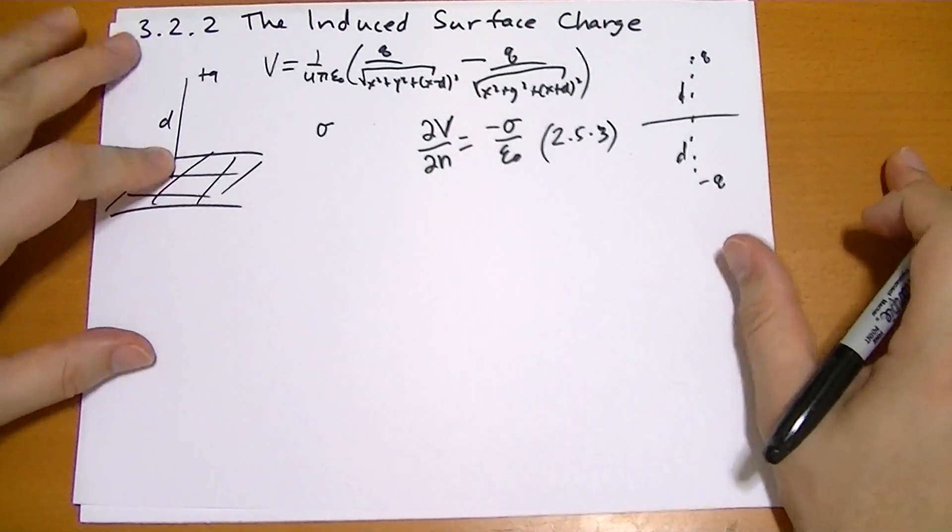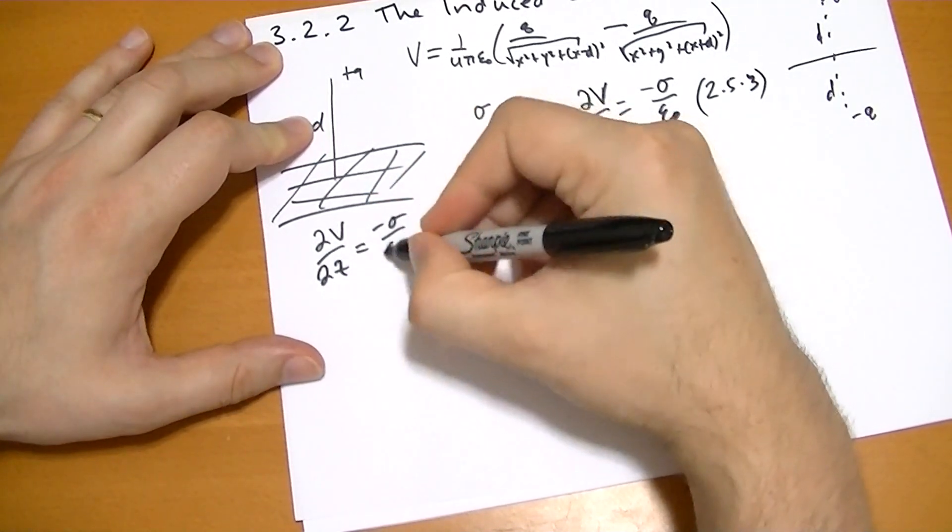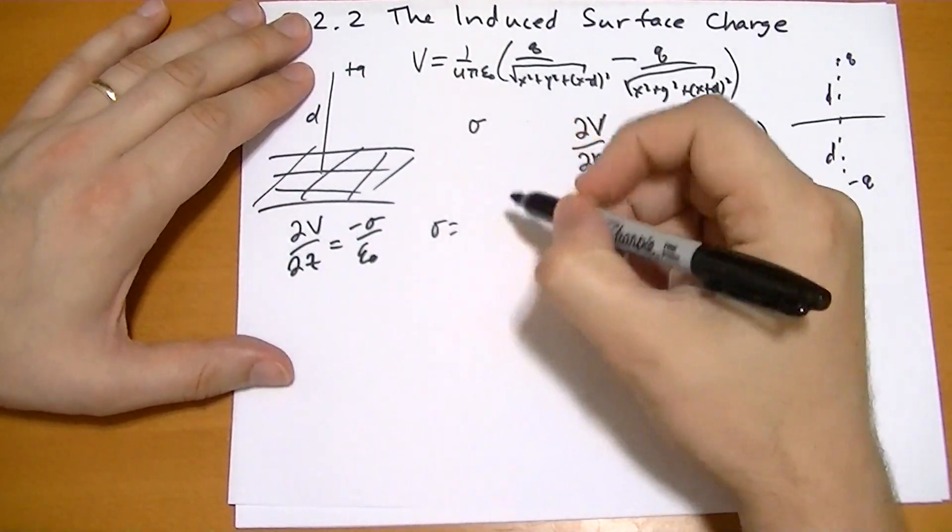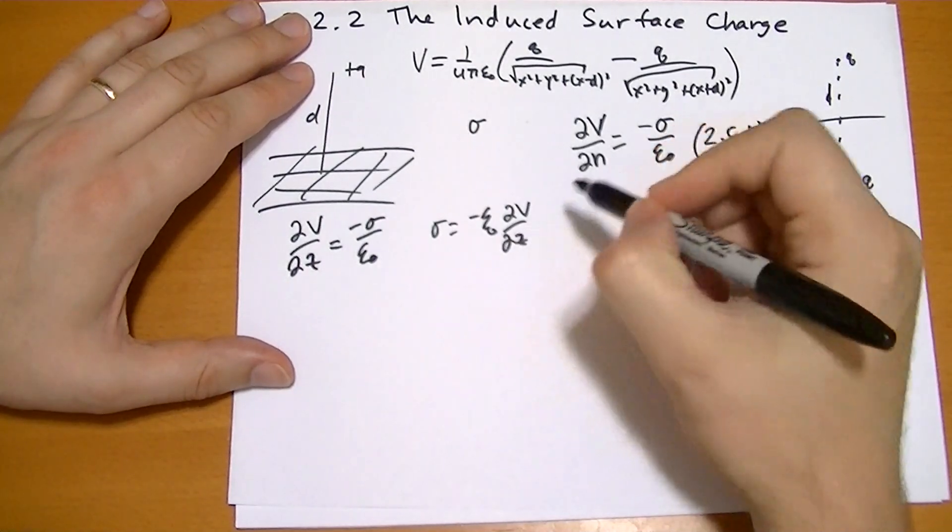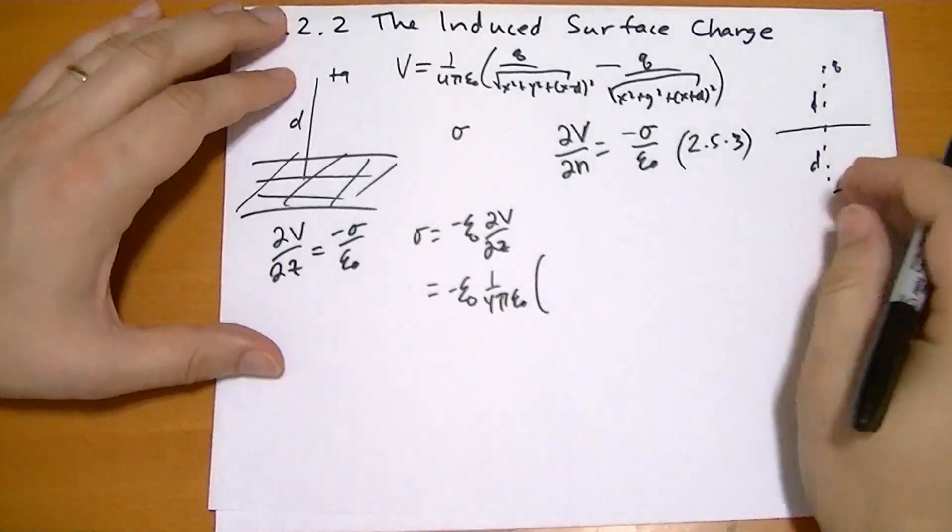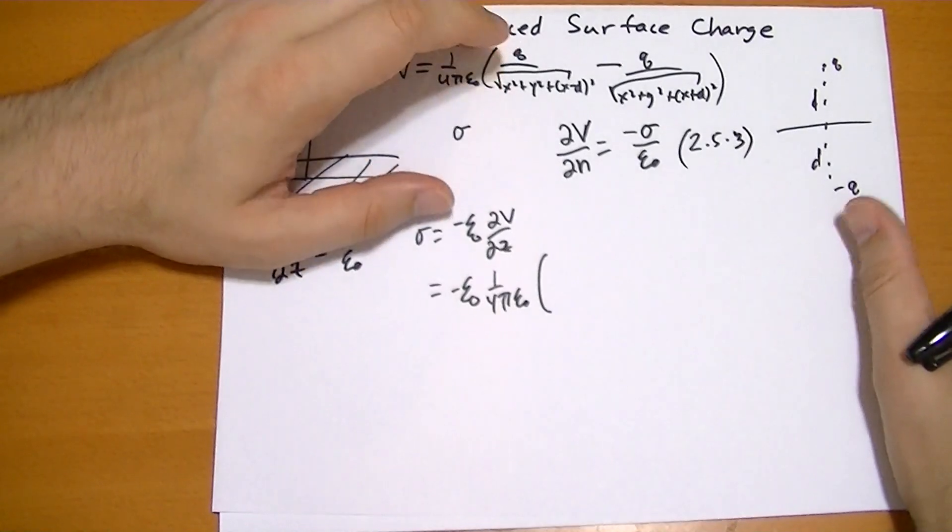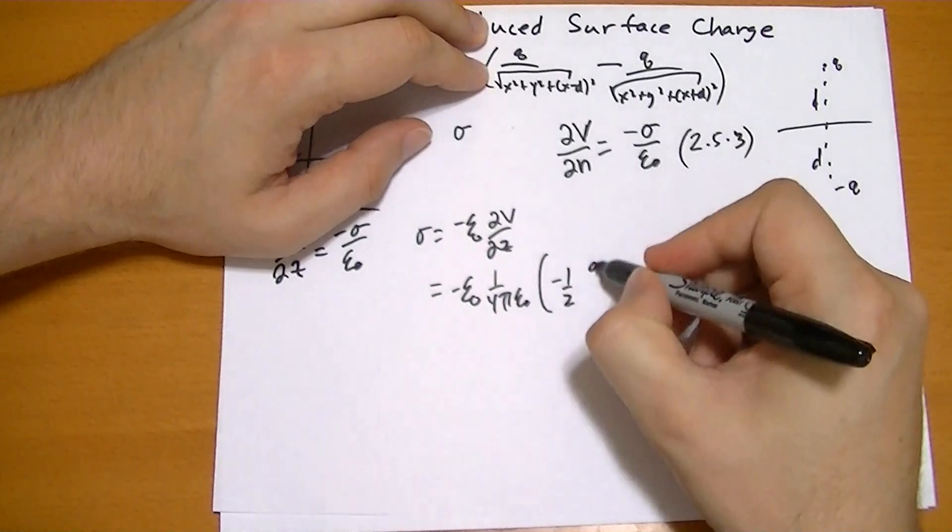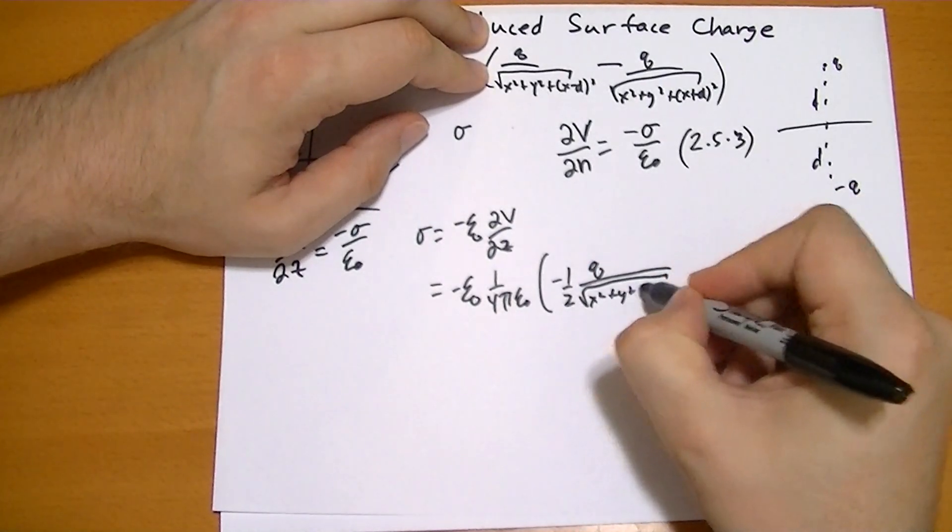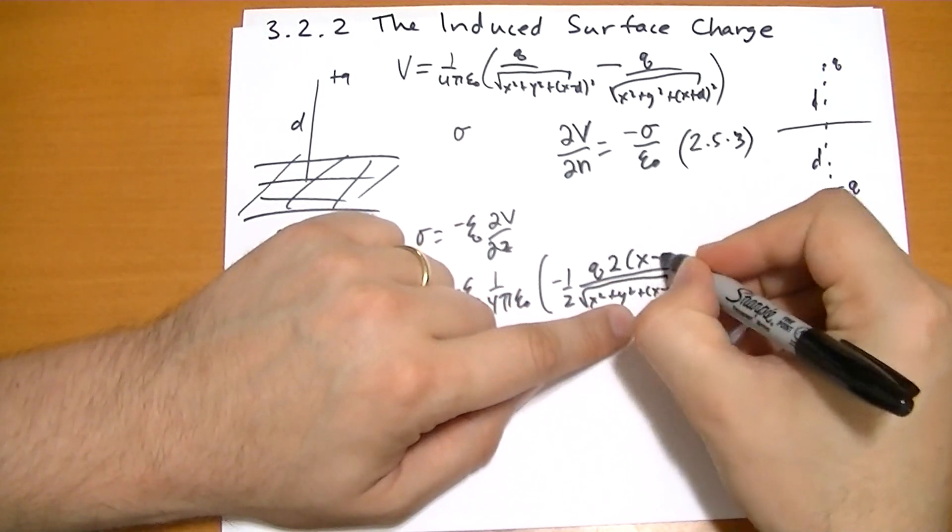In this case, the normal is z. So dV by dz equals minus sigma over epsilon naught. Solving for sigma, sigma equals minus epsilon naught dV by dz, which when we differentiate this, we get epsilon naught one over four pi epsilon naught. We're taking the derivative of something to the negative one-half power. So we have negative one-half times q over that thing, x squared plus y squared plus z minus d squared times the derivative, 2 times z minus d. These twos cancel.